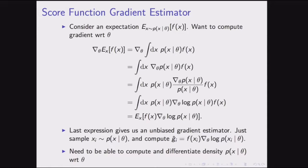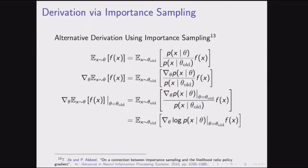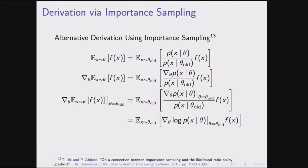The only requirement for this estimator is being able to analytically compute the probability density and differentiate it with respect to theta. There's another derivation using importance sampling: write the importance sampling estimator and swap the derivative with the expectation to get the same result.